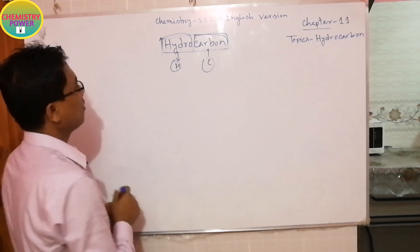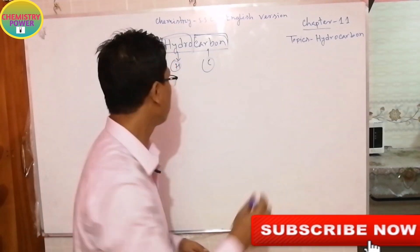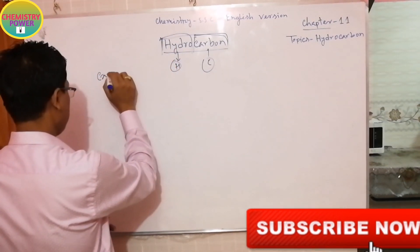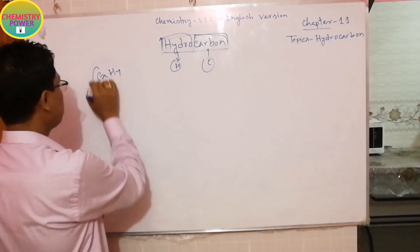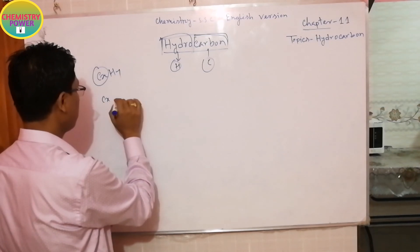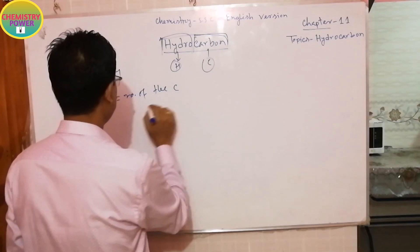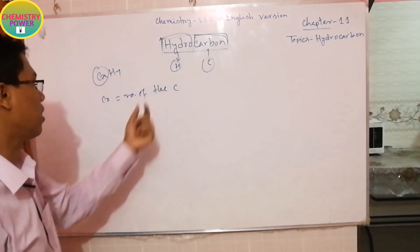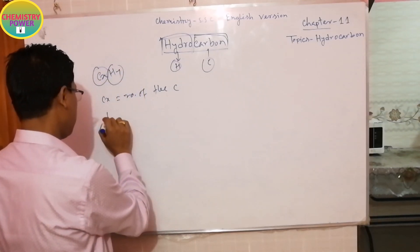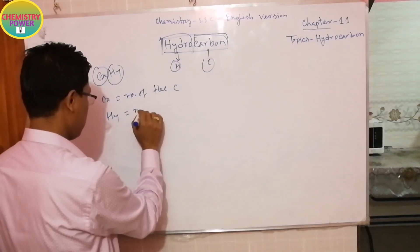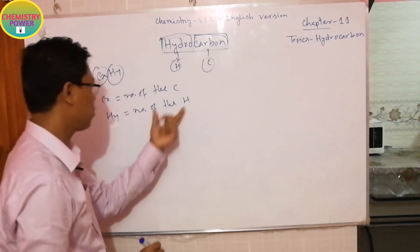Besides this, generally hydrocarbons are expressed as CₓHᵧ, where Cₓ represents the number of carbon atoms in that hydrocarbon and Hᵧ represents the number of hydrogen atoms.